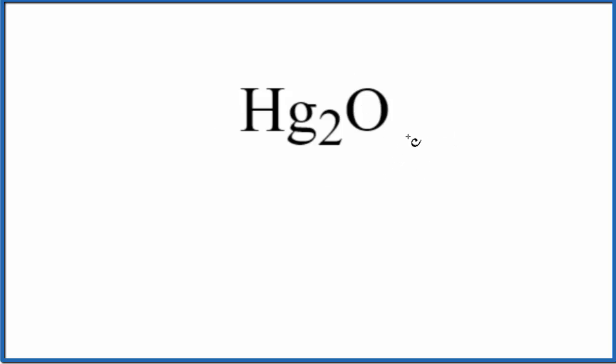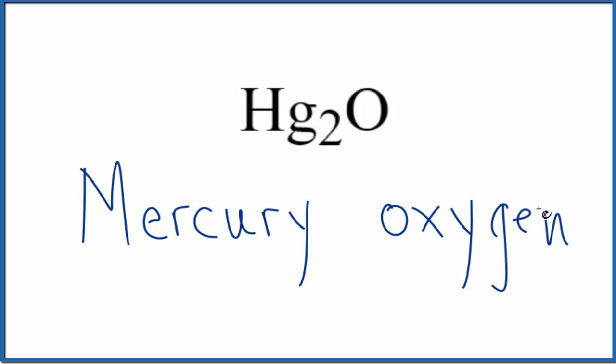So we're going to name this as an ionic compound. Let's first write the name for Hg as it appears on the periodic table, that's mercury. Then we'll write the name for the nonmetal oxygen here, lowercase O, and we cross the ending out and we write -ide.